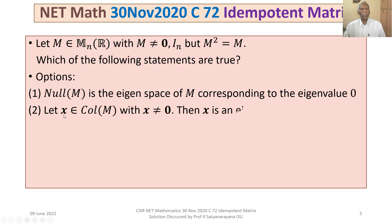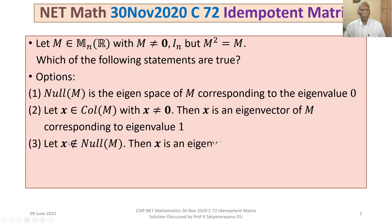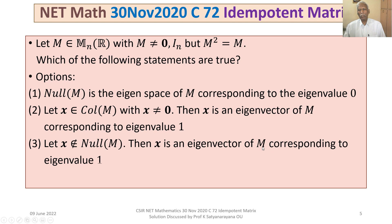Option 2: Let x belong to the column space of M with x not equal to zero; then x is an eigenvector of M corresponding to the eigenvalue 1. Option 3: Let x not belong to the null space of M; then x is an eigenvector of M corresponding to the eigenvalue 1.